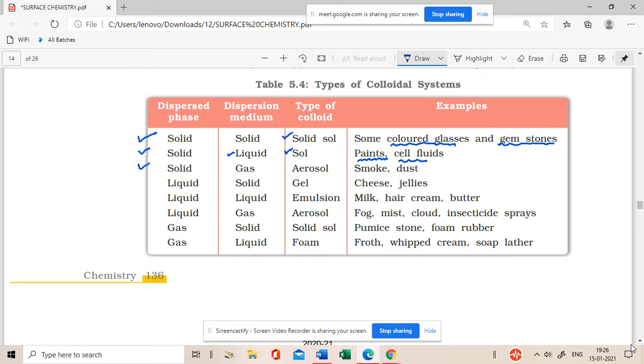Then a solid is dispersed in a gas. The easiest example is smoke. Smoke is the best example, or the dust particles that are present in the atmosphere. So that is solid dispersed in a gas.